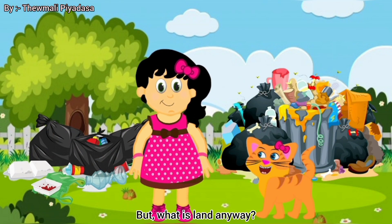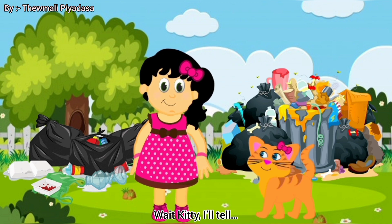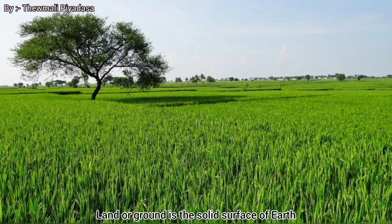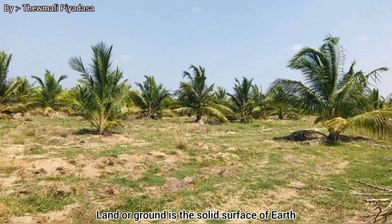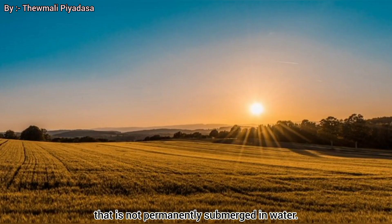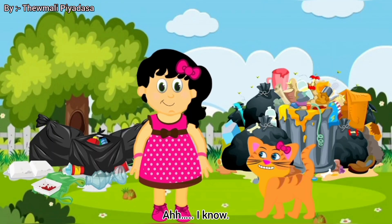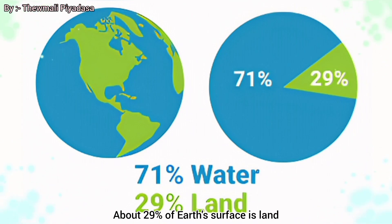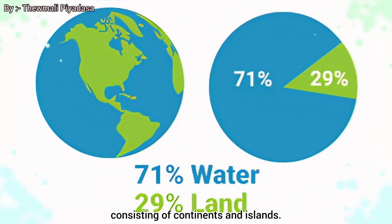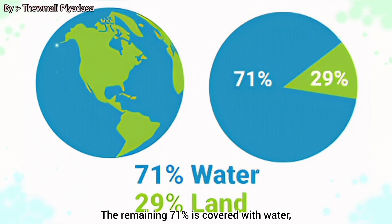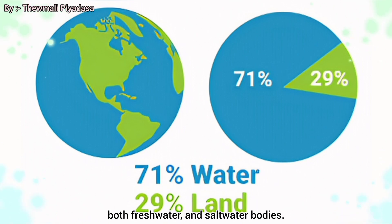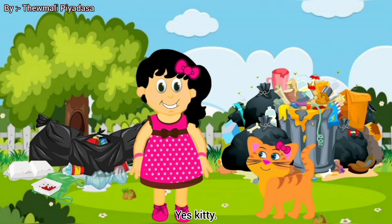But what is land anyway? Land or ground is the solid surface of the earth that is not permanently submerged in water. About 29% of earth's surface is land, consisting of continents and islands. The remaining 71% is covered with water, both fresh water and salt water bodies.